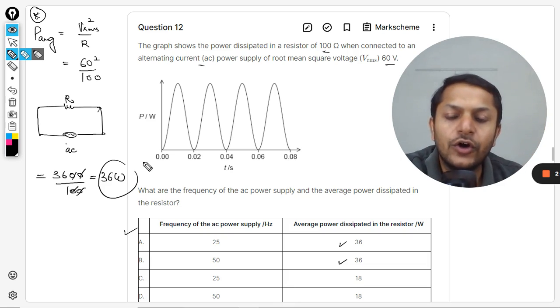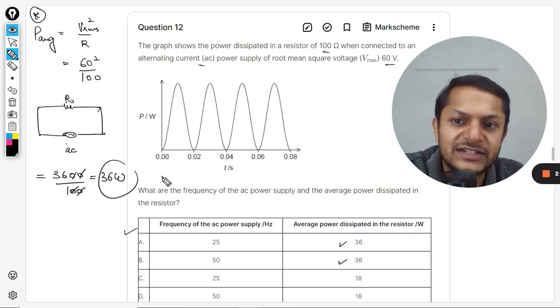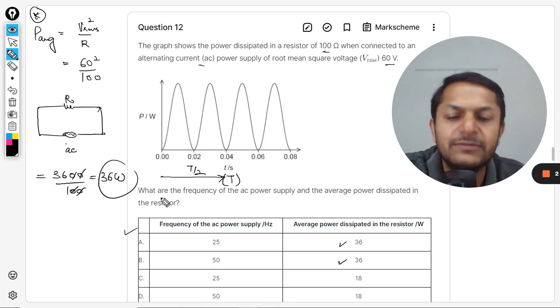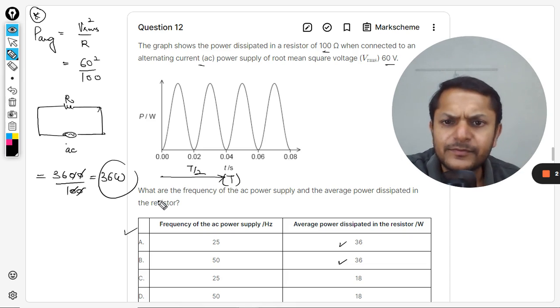So we can say that the oscillation is getting completed in the time period there. So this is the capital T and this is actually T by 2 for the oscillation. So the time period actually is 0.04.